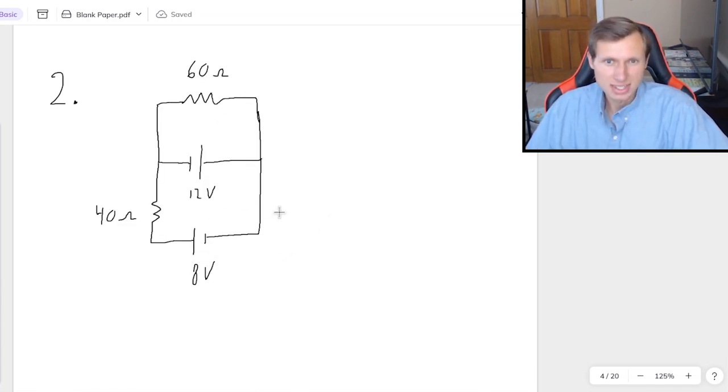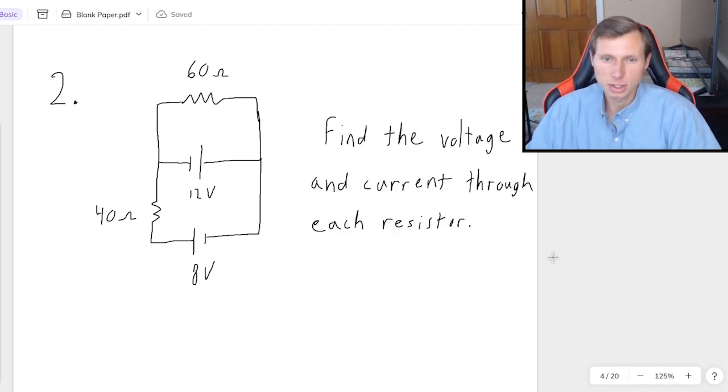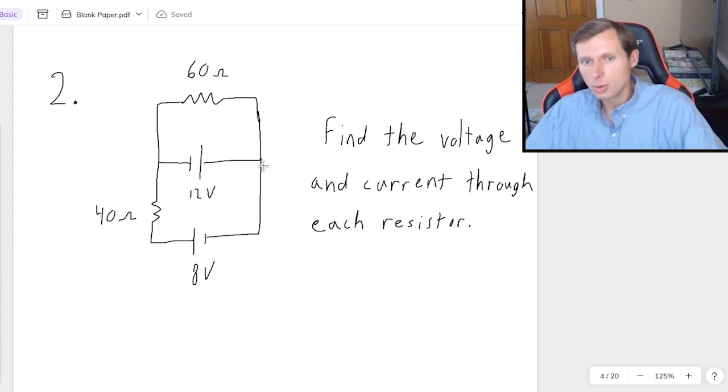So here's the next circuit. Two batteries, two resistors, and the question I'm going to ask is, find the voltage and current through each resistor, the 40 ohm and the 60 ohm. And we're going to solve it using KCL. So first I want to take note that there are two junctions here, that one and that one. But since it's kind of connected through the same path, it's going to make the same equation whether I choose the left one or the right one. And I'll explain what I mean by that in a minute.